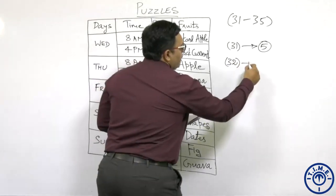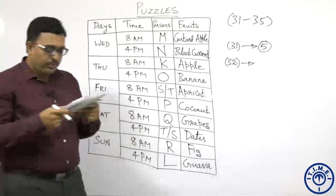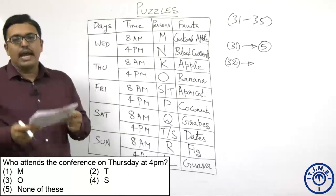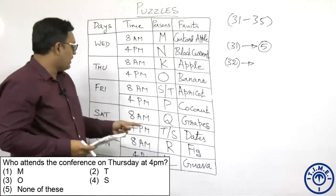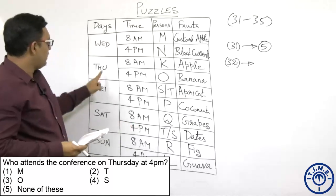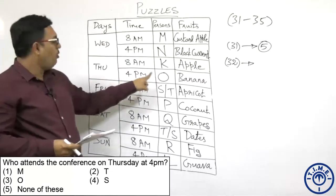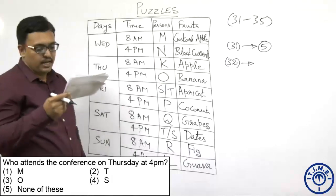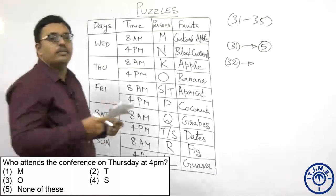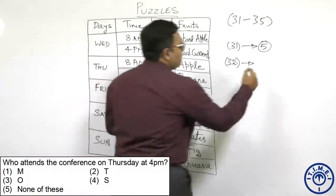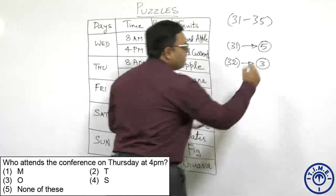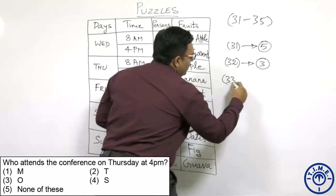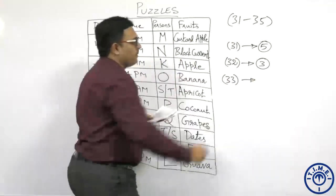Question 32: Who attends the conference on Thursday at 4PM? O is attending at Thursday 4PM and he likes banana. Checking the options, O is given in the third option. So for question 32, the third option is your answer.